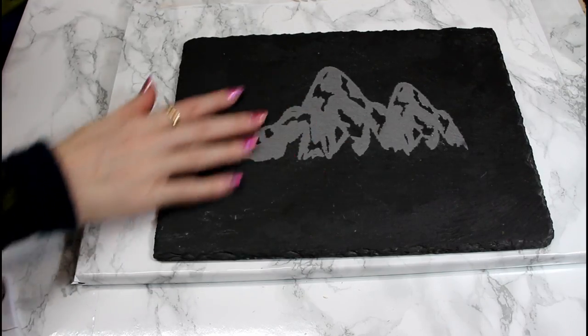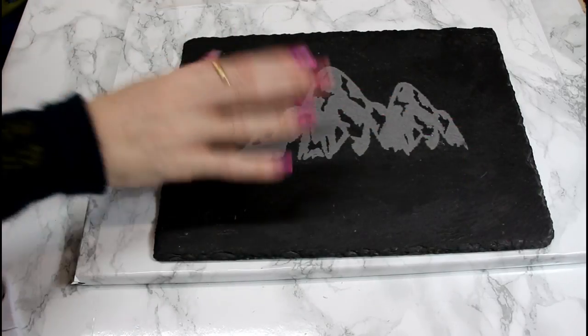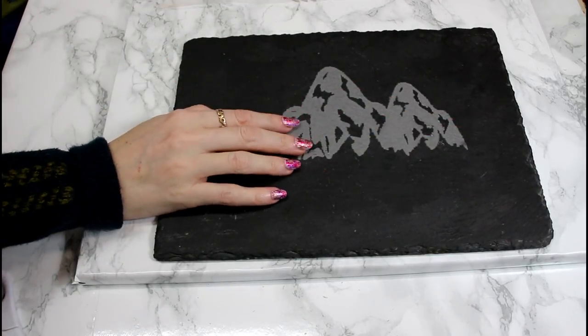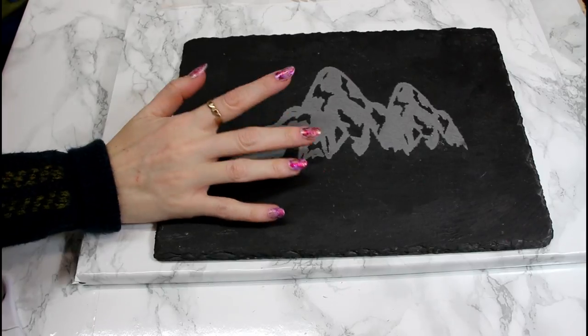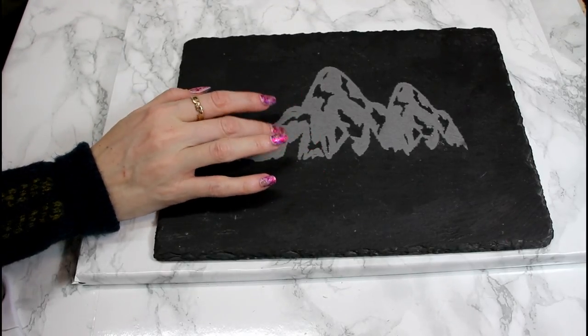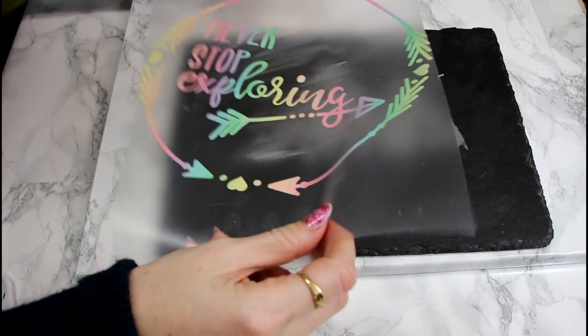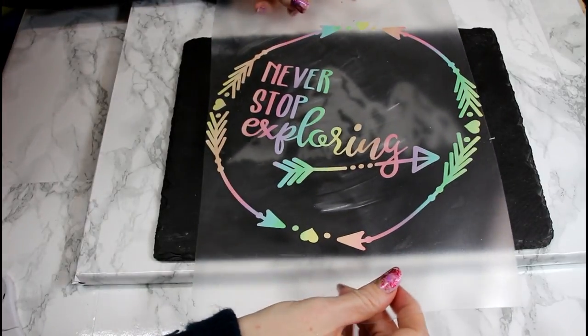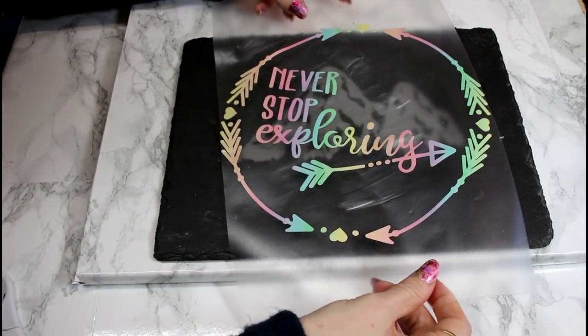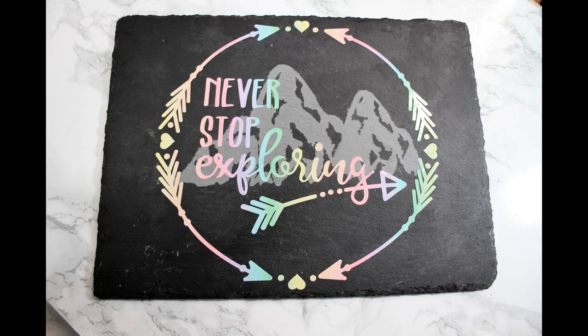So you can see that that's now etched and it's all dry, and it works really well with the 651. It's a great inexpensive vinyl to use when stenciling. I've also weeded and already transferred my rainbow vinyl, so I'm just going to go and work out where I want that to sit.